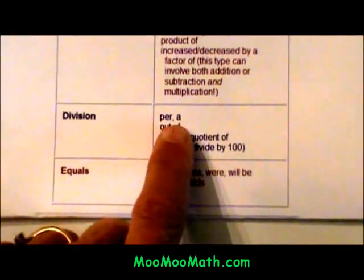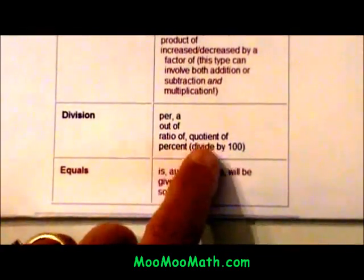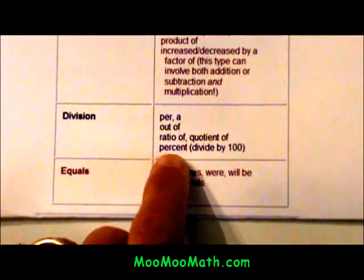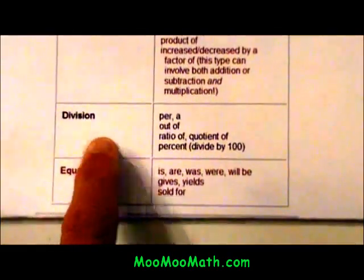If you see these keywords per, a, out of, ratio, quotient, percent—percent is always divided by 100, by the way—you will use division.